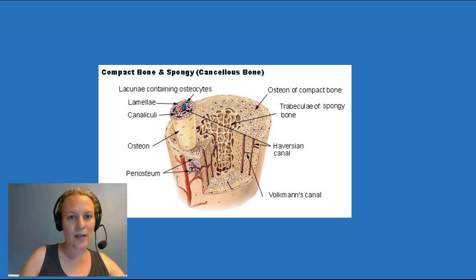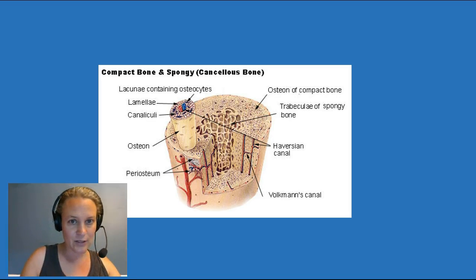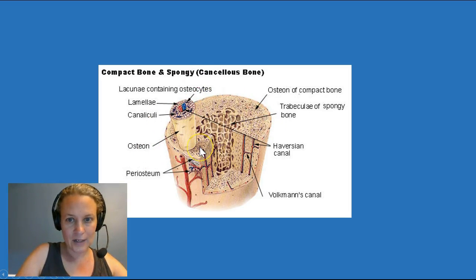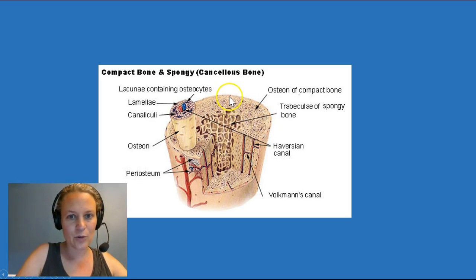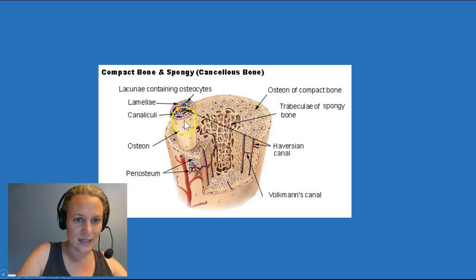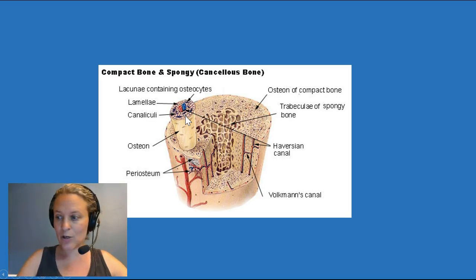Let's look at the structure in a little more detail. We need to look at two things: the matrix that's in the bone, and the cells that are living within this matrix. When we take a closer look at a bone — especially the outer area or the cortex, the compact bone — we see these little circular patterns called osteons. That's kind of like a unit of compact bone. The osteon has these rings in it called lamellae, and those are rings mostly made of collagen fibers.